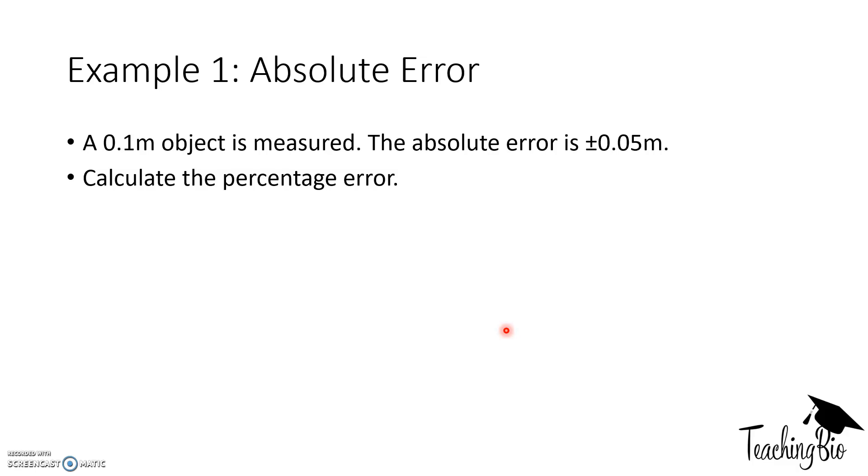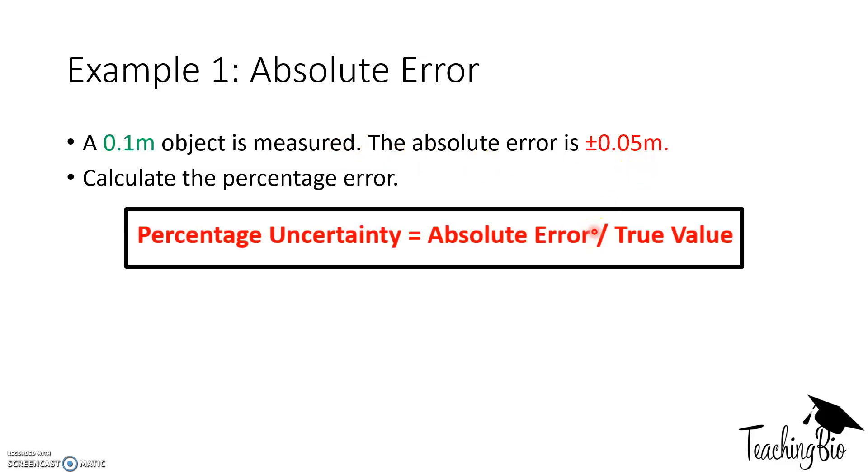Okay, so let's get straight on to the calculations. Here's an example. A 0.1 meter object is measured. The absolute error is 0.05. Calculate the percentage error. Okay, so how do we do this? We need to know that the formula is percentage uncertainty equals absolute error over true value. Absolute error is the plus or minus sign, and the true value is the true value. So we take 0.05 and divide it by 0.1, then 0.05 divided by 0.1 times 100 because it's a percentage to get 50%. So the percentage uncertainty is 50%.